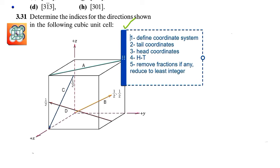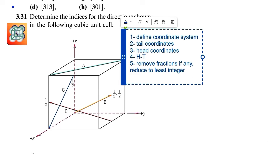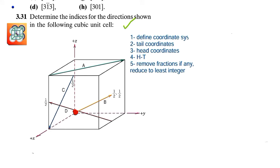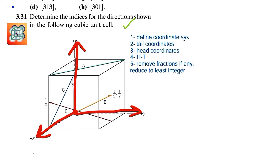The first step is to define the coordinate system. Whenever you are finding out the Miller indices of directions or planes, the most important step is to define the coordinate system. In our case the coordinate system has already been predefined. In some cases the problem has already defined the coordinate system for you, but in other cases you have to do it yourself. This origin works really fine in every case, with positive x-axis and positive y-axis as shown.